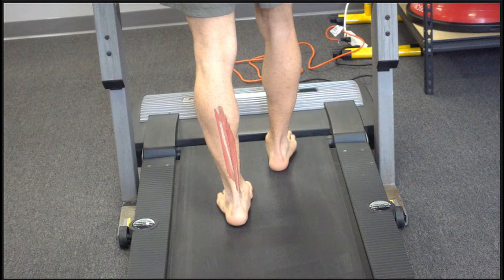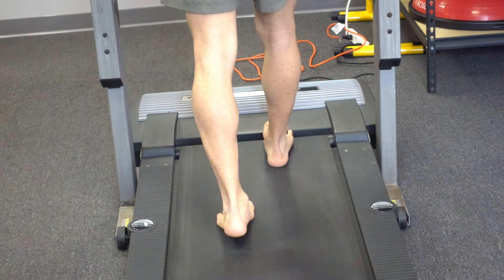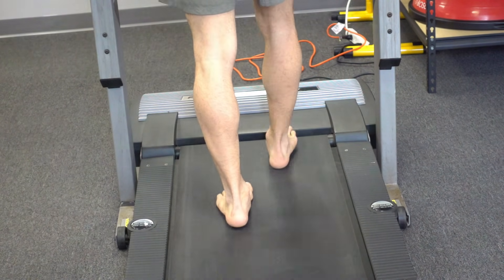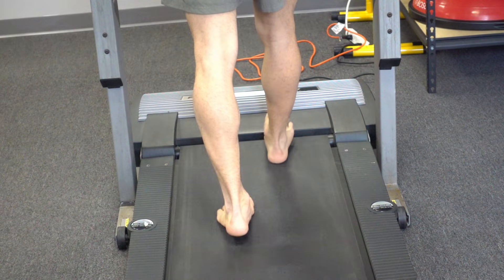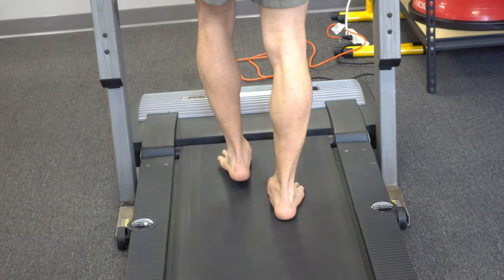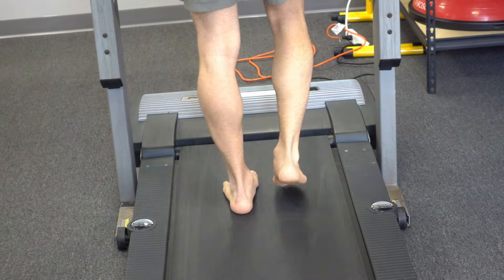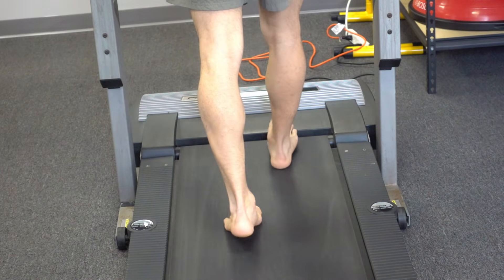During terminal stance and pre-swing, the muscles concentrically contract to drive the foot back into a supinated position. The supinated foot makes for a rigid lever to help with propulsion. Let's travel up the kinetic chain to our next stop.